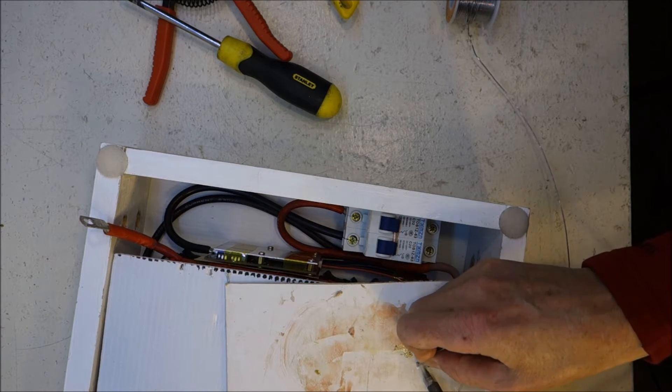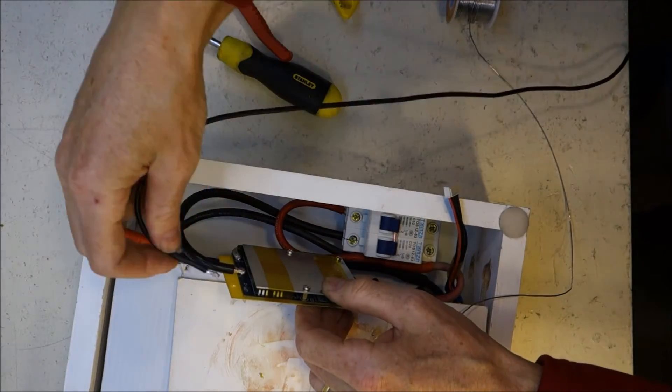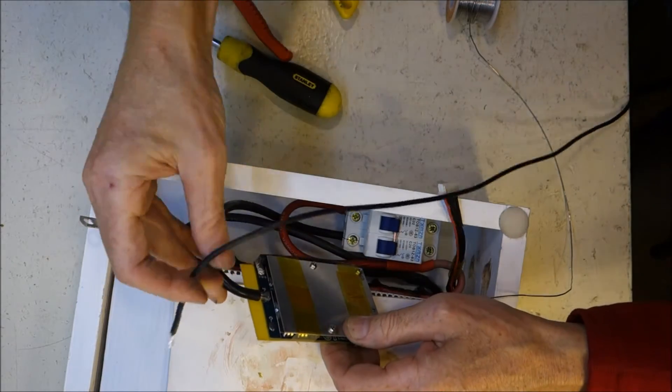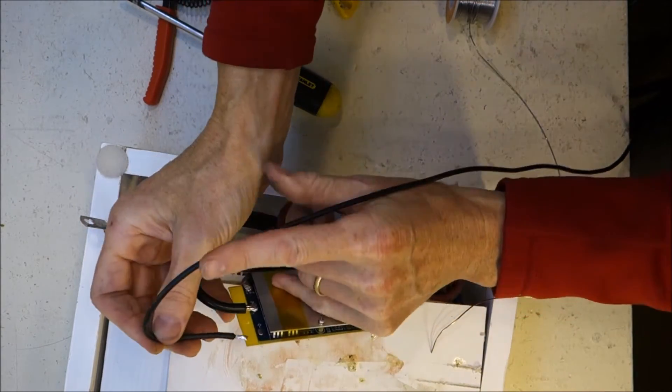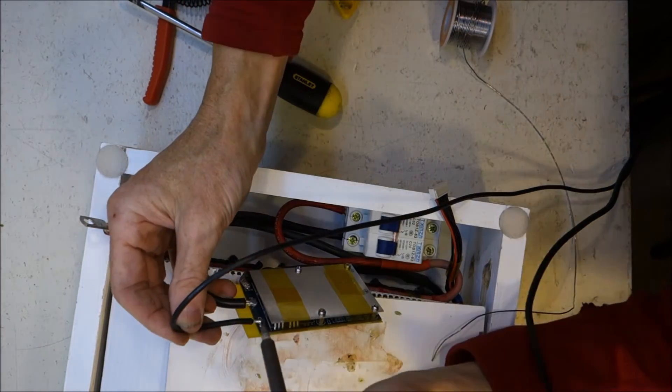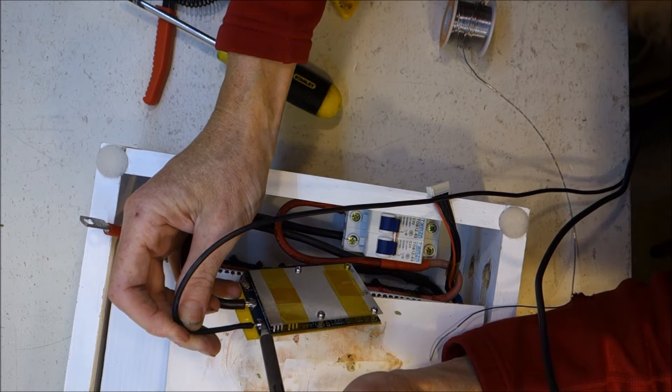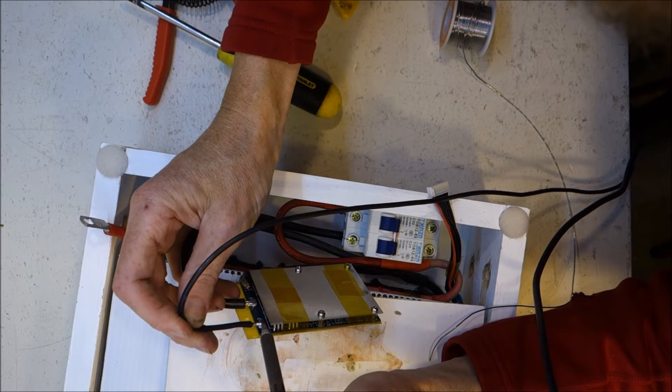Here goes the negative of the charge line and that goes to C- on the BMS. So this is one of these generic cheap Chinese BMSs. It's rated at 30 amps continuous, supposedly 60 amps peak. I will be happy if it can cope with 20 amps.